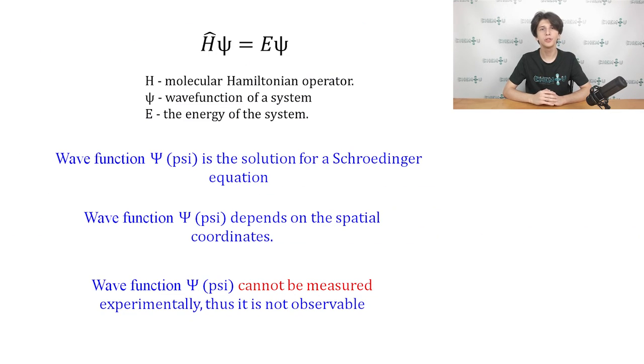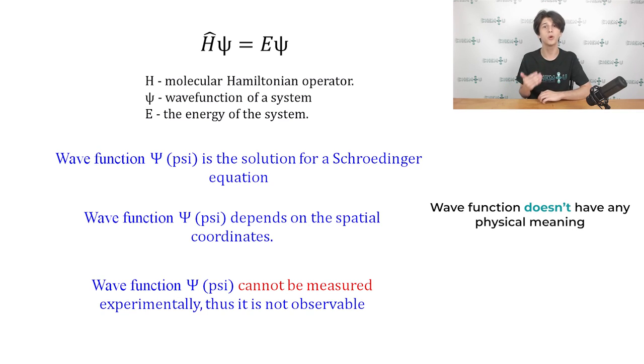To recap, the solution of the Schrödinger equation can be expressed in the form of a wave function ψ, which is related to the energy and position of an electron in a three-dimensional space. In reality, however, it turns out that wave functions do not have any physical meaning. In other words, the wave function that describes the motion of electrons cannot be measured experimentally, and is thus not observable.